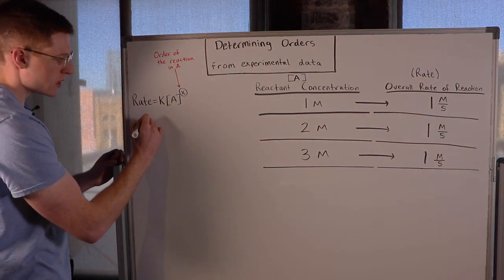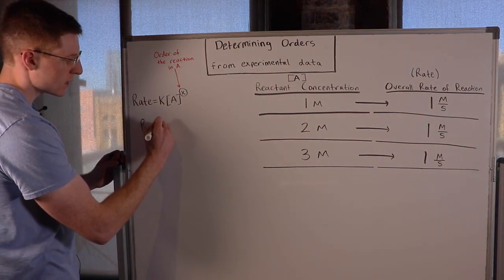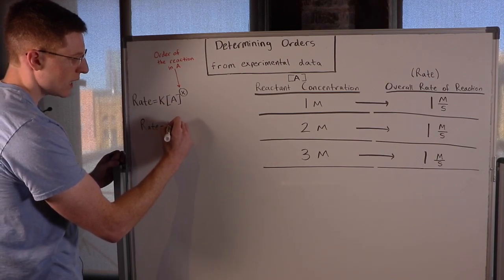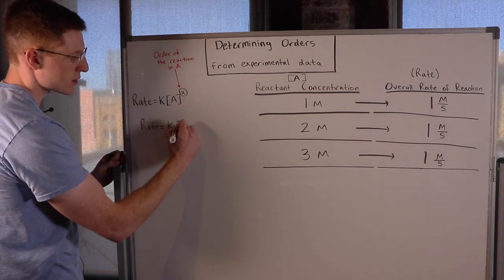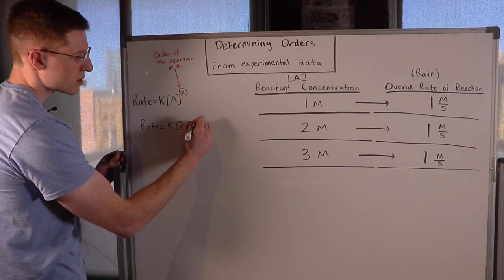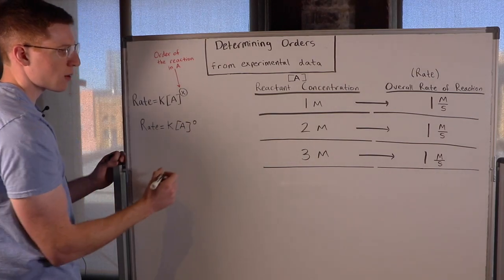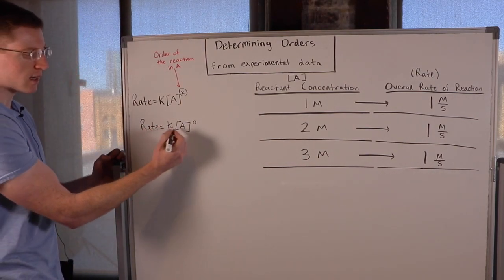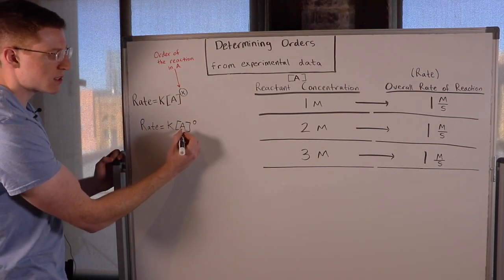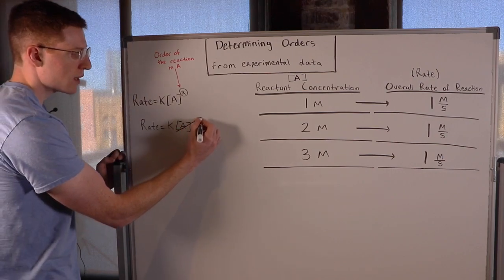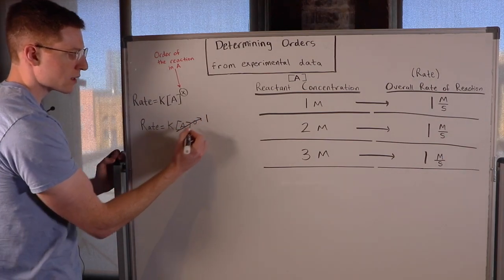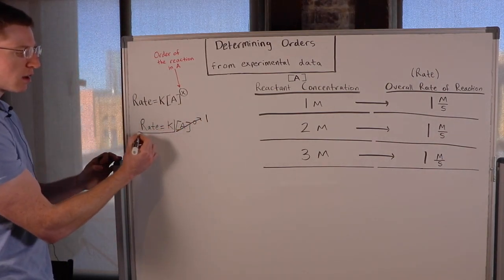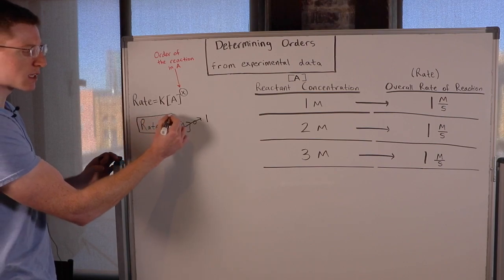In this case we would say that the rate is equal to K times the concentration of A to the zero power, because A doesn't actually affect the rate. Anything to the zero power is just 1, so A is actually excluded from the rate law in this case.